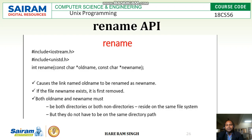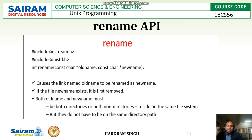If the file new_name already exists, it is first removed, and then old_name is renamed to new_name. Both old_name and new_name must both be directories or both be non-directories, and they must reside on the same file system.